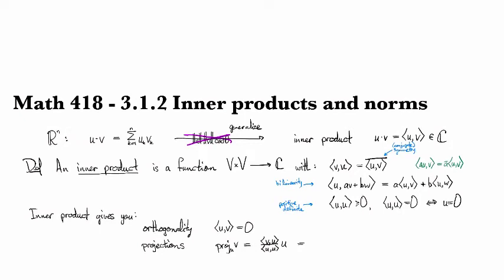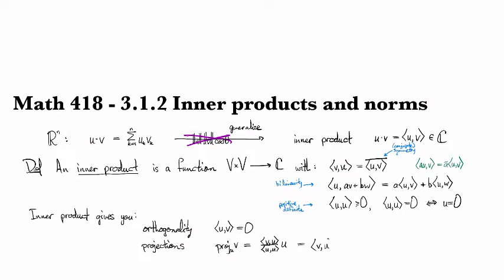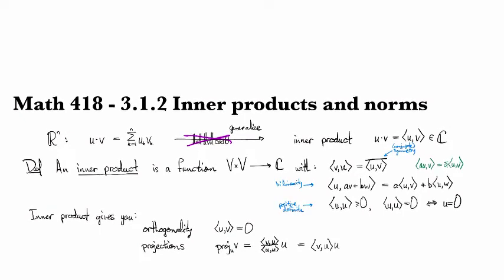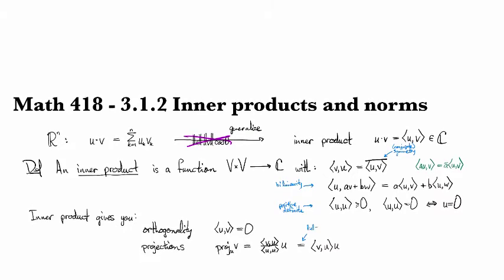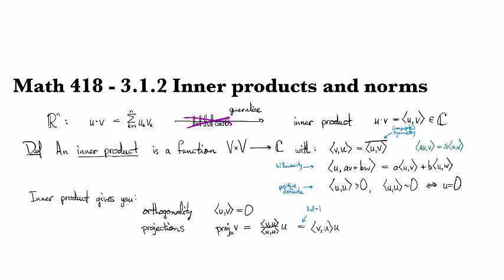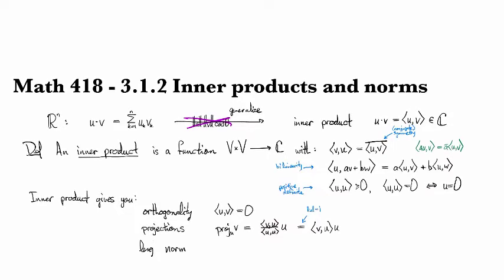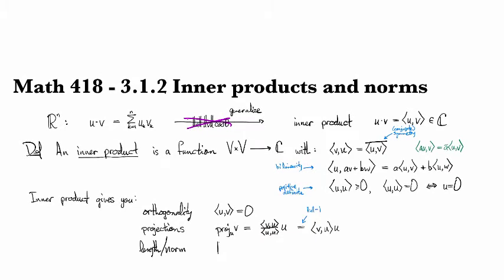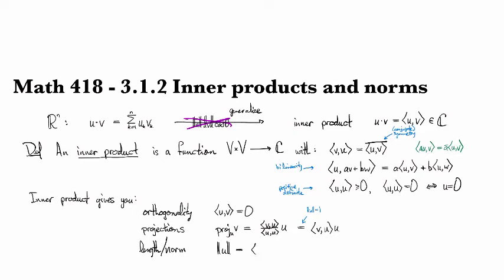In the case when U is a unit vector, so if it has length one, then this just looks like VU times U. And so that's when U has norm one, or length one. Speaking of which, that's another thing that the inner product gives you, norm, or length. So you can define a norm by saying that the norm of U, or the length of U, or the magnitude of U, these are all synonyms, is the square root of the inner product of the thing with itself.